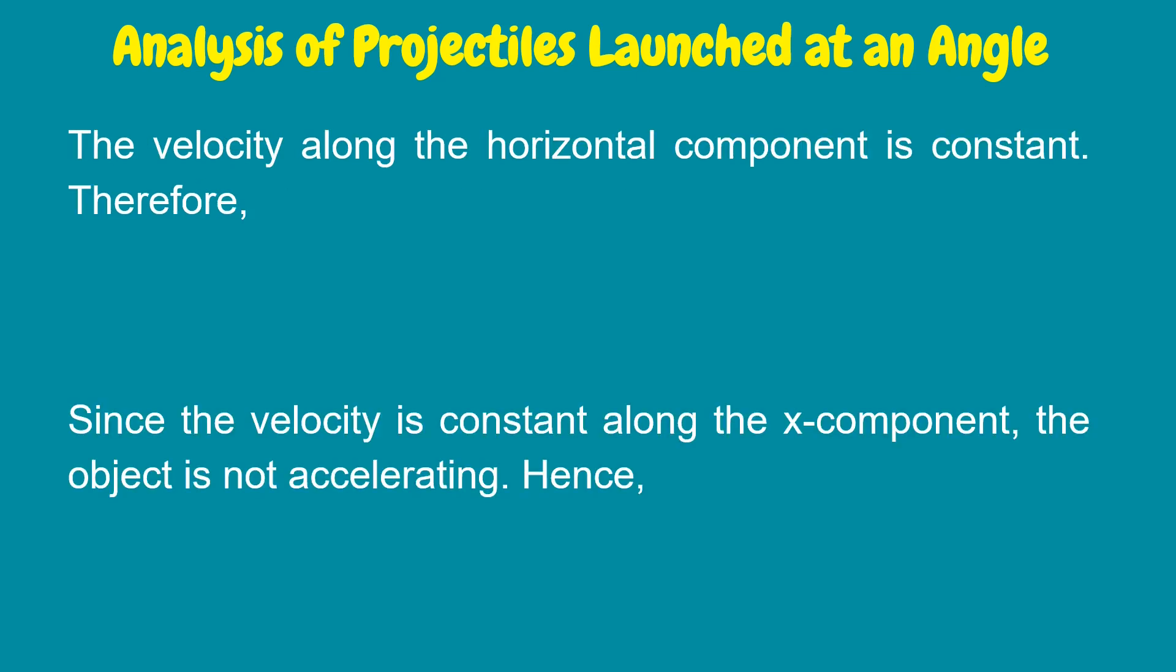The velocity along the horizontal component is constant. Therefore, initial velocity equals final velocity along x, or simply v sub x or velocity along the horizontal. Since the velocity is constant along the x component, the object is not accelerating. Hence, acceleration equals zero.